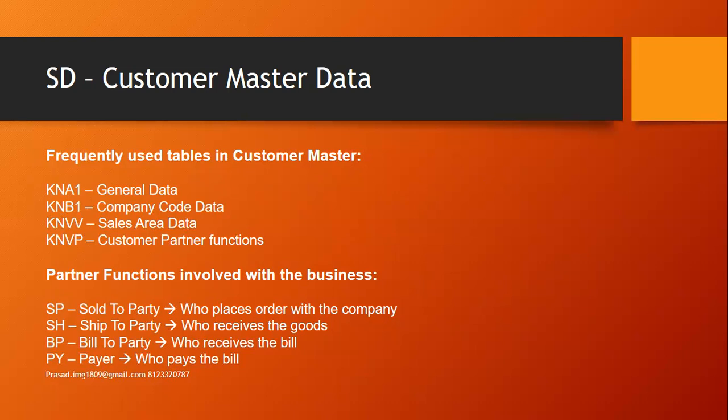In SAP SD, there are partner functions: sold-to party, ship-to party, bill-to party, and payer. All four partner functions can be a single customer or four different customers. Sold-to party is who places the order with the company; ship-to party is who receives the goods; bill-to party is who receives the bill; and payer is who pays the bill.